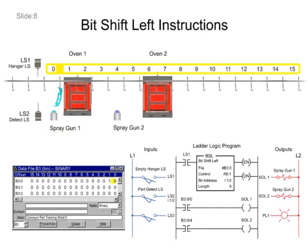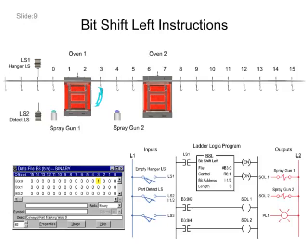As the part continues to move through the process, the status of the bits are continually shifting as the LS1 input transitions from false to true. The part with logic 1, now located at position 3, is located in the bit array at bit 3.